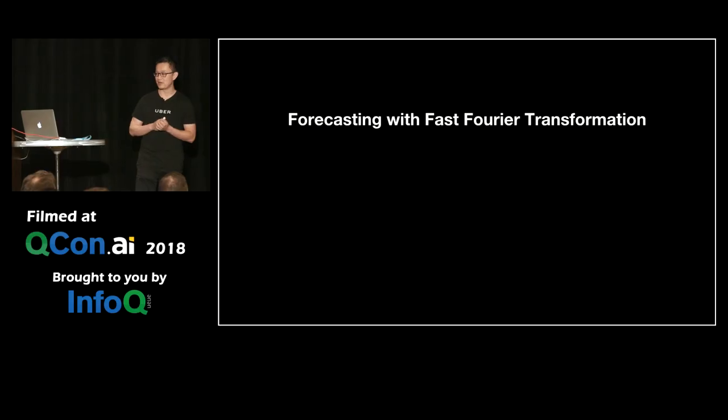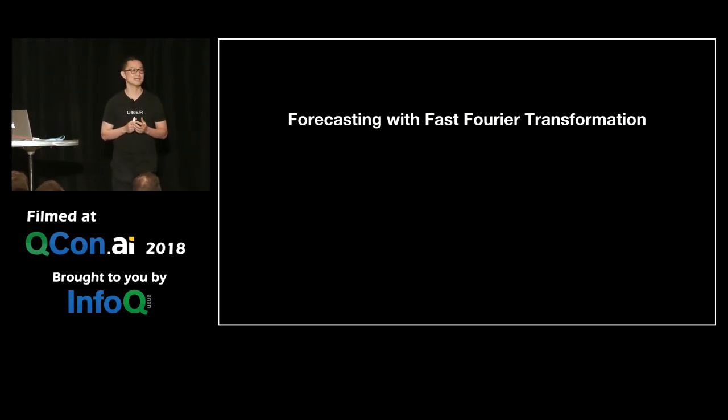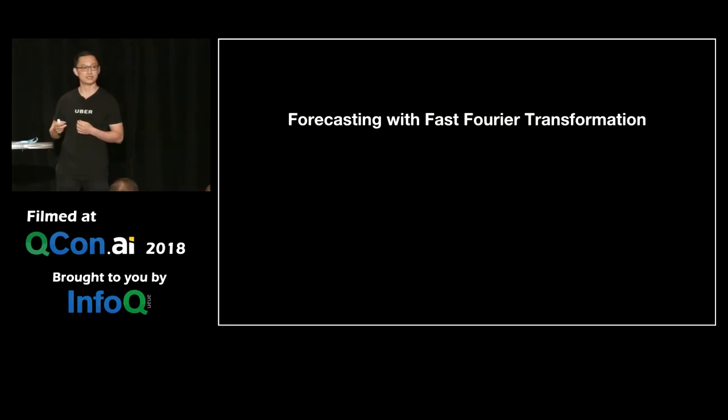The first one is forecasting with fast Fourier transformation. It sounds like a mouthful, but what I want to convince you is if you just started in this business and don't know much about this, this is a really good algorithm to start with. When my boss asked me to do forecasting, I was panicking. I had to find in two weeks something simple, easily understandable, and easily implementable. This is what we chose as our first iteration of our forecasting pipeline.